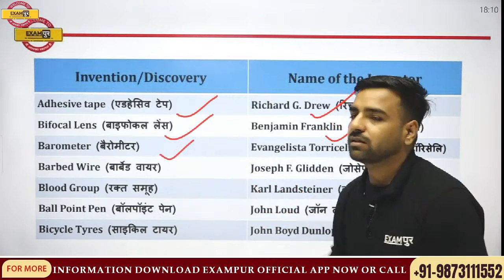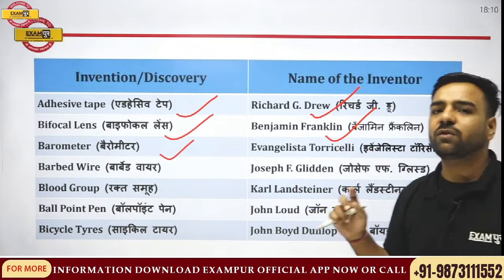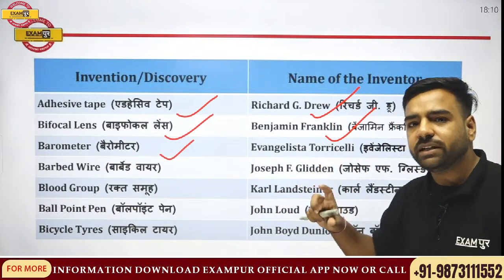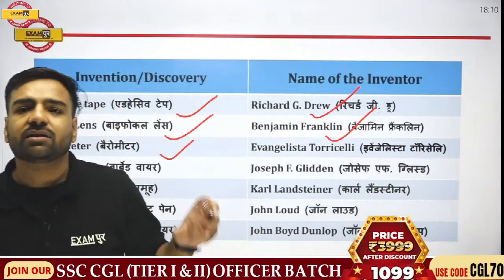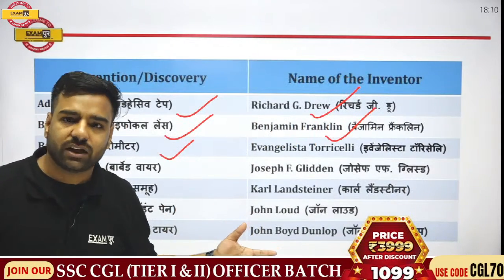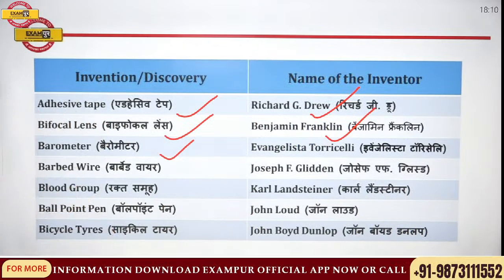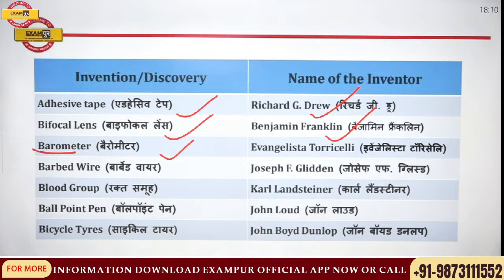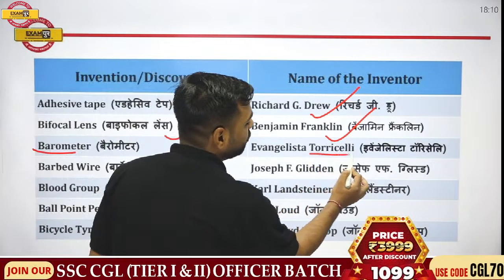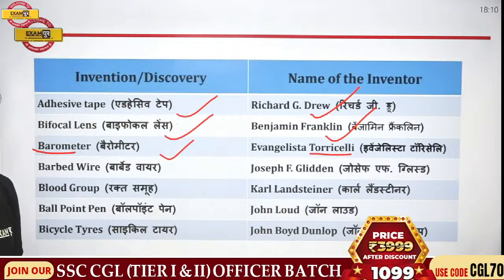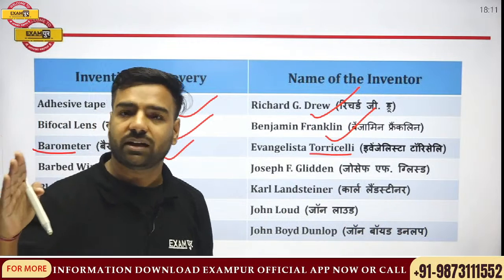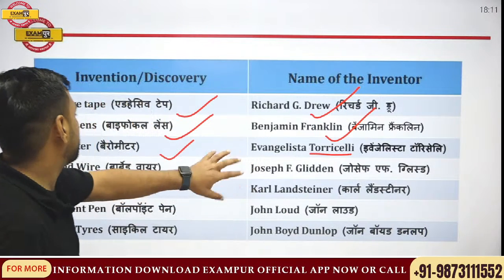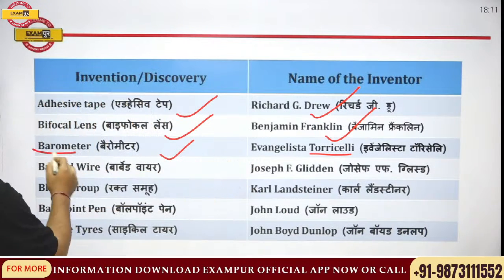Next comes the barometer. The barometer is used for measuring atmospheric pressure. Who discovered the barometer? He was Torricelli. You must have read about Torricelli when studying about pressure. So Torricelli was the one who discovered the barometer.